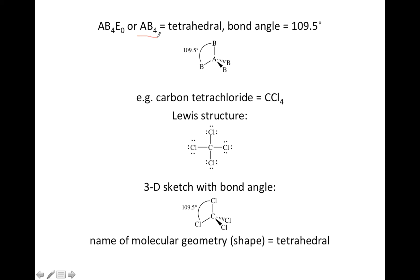Next example, AB4E0, or simply AB4 — that's four atoms bonded to the center and no lone pairs. It's called tetrahedral, and the bond angle is going to be 109.5 degrees. If you were stuck in two dimensions, a square arrangement would give you 90 degrees, but going to three dimensions does better. In the drawing, a plain bond is in the plane of the paper, a solid triangle means it's coming out towards you, and a dashed triangle means it's going behind the paper. Imagine a pyramid with the B atoms at the corners and the A atom in the dead center — that gives a bond angle of 109.5 degrees.